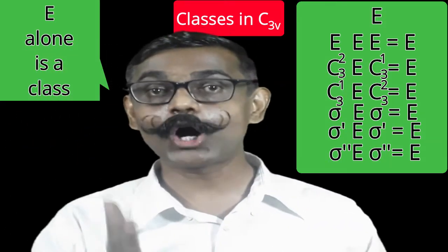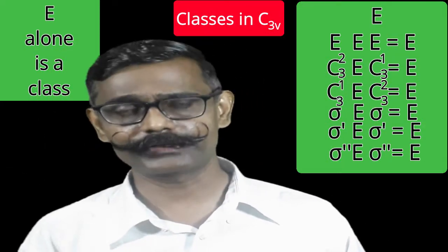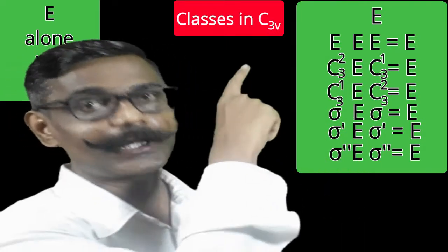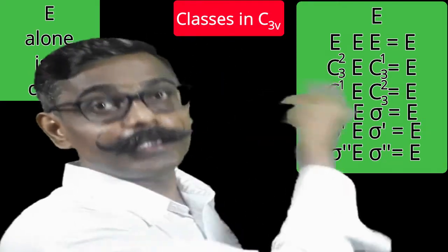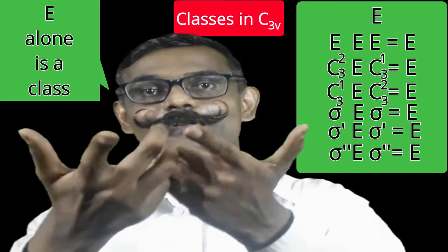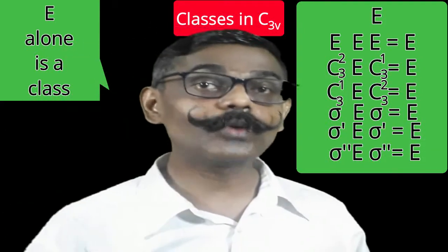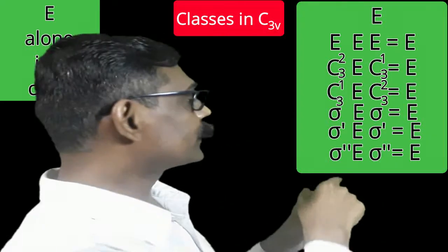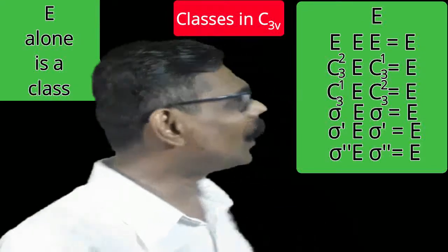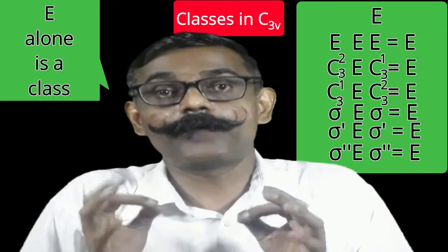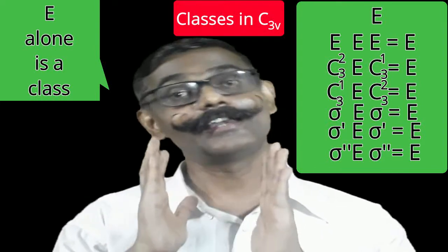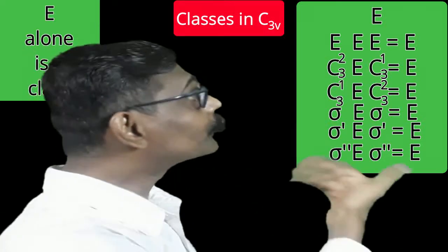Now similarity transforms of identity through sigma, sigma-dash, and sigma-double-dash. Since sigma is its own inverse: σ × E × σ = σ × σ = E. Likewise, σ' × E × σ' = E, and σ'' × E × σ'' = E. Combining all results, the class of identity has only one member; g = 1. The order six is divisible by one.